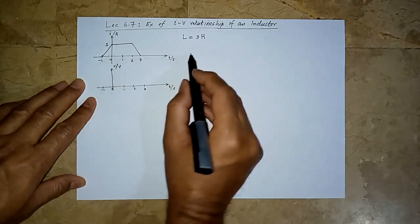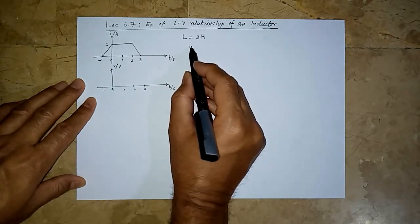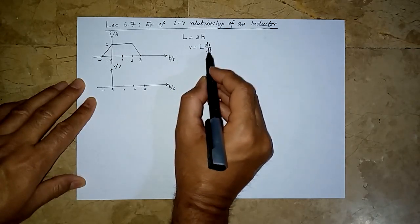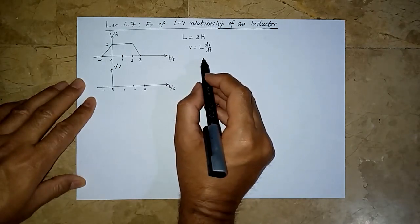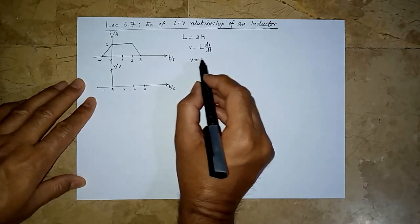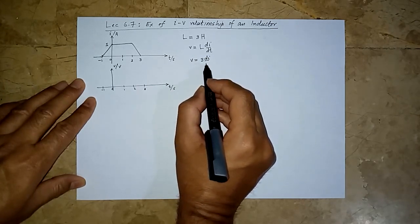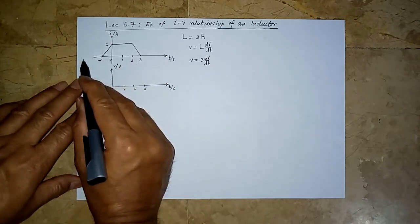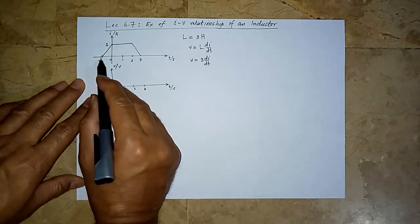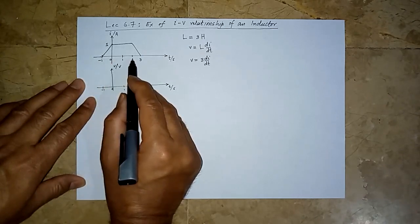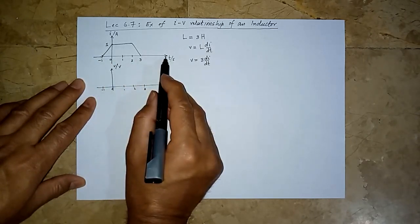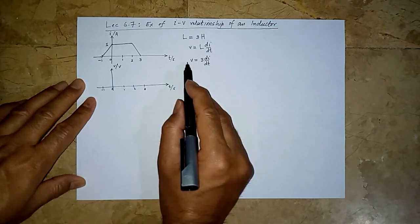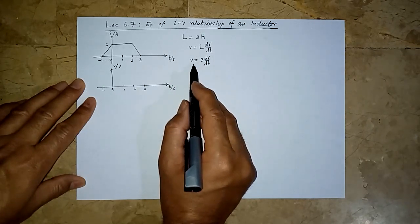We know that v is related to i for an inductor as v = L·di/dt. In this case, v = 3·di/dt. So if we have an expression of i for all time intervals — minus infinity to minus 1, minus 1 to 0, 0 to 2, 2 to 3, and 3 to plus infinity — we can take its derivative, multiply by 3, and get the voltage for each interval.